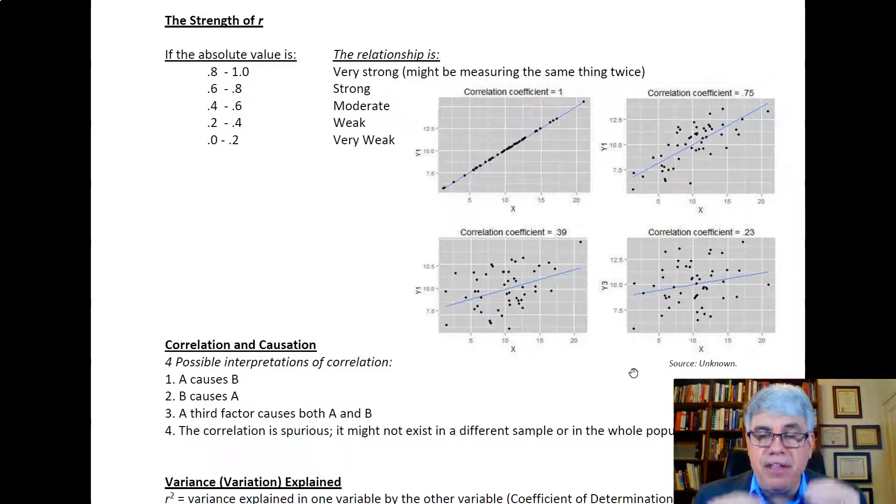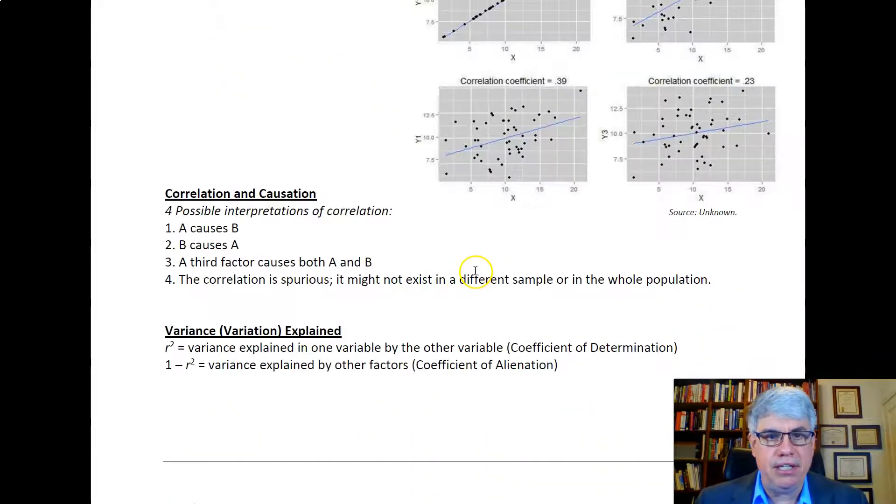When we have r between two variables and we think there's causation happening, there's four possible interpretations of correlation, four possible causal interpretations. One, that A causes B, or it could be B causes A. Just because they're correlated, we don't know which one's causing the other. A third factor could cause both A and B. Or the fourth possibility is the correlation is spurious. It's just the numbers that we pumped into Excel and we got some number, but in the population the correlation doesn't really exist.